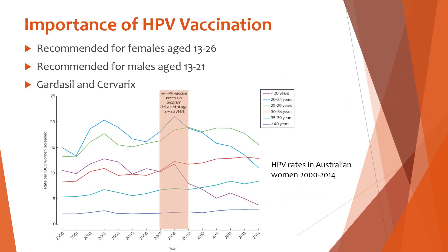A critically important tool in the prevention and treatment of HPV are vaccinations. Two brands include Gardasil and Cervarix. Vaccination is recommended for females aged 13 to 26 and men aged 13 to 21. As you can see from the graph, when vaccination was introduced in Australia, the rates of HPV declined significantly in women less than 30 years old who were given the catch-up vaccine, but did not decline in women over the age of 30 who were not given the vaccine.